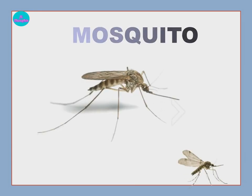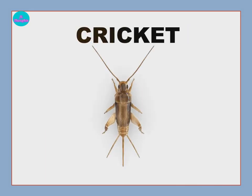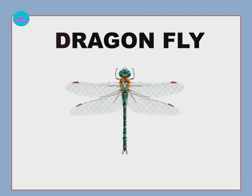Mosquito — M-O-S-Q-U-I-T-O — Mosquito. Cricket — C-R-I-C-K-E-T — Cricket. Dragonfly — D-R-A-G-O-N-F-L-Y — Dragonfly.